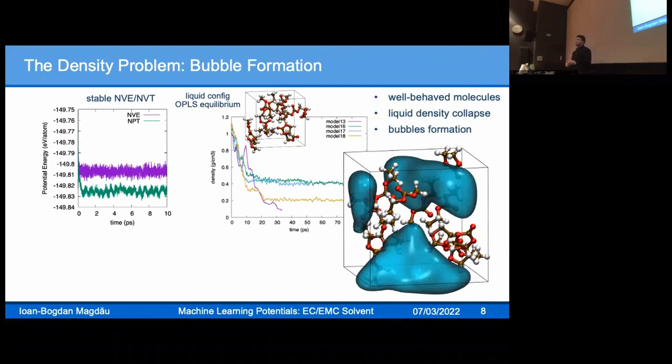You can do NVE dynamics or NVT dynamics, any kind where the volume remains fixed, everything looks well behaved. The potential energy surface is stable, fluctuates around the stable equilibrium value. But when you use NPT dynamics, within 20 to 30 picoseconds, essentially all configurations you start from fall apart. Molecules remain well behaved, but the liquid density collapses, bubbles start to appear everywhere, and the whole thing falls apart.